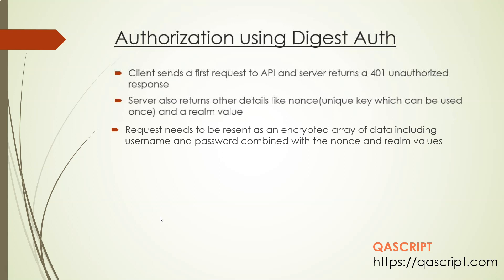The second request needs to be sent to the server as a form of encrypted array of data, including a username and password combined with the nonce and realm values. These are the values or data which you need to provide to the server in order to authorize your request for that particular application. This is known as digest authorization — meaning you need to send multiple requests to the server in order to authorize.